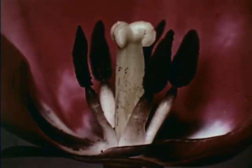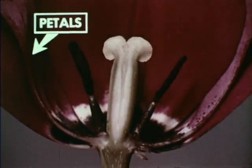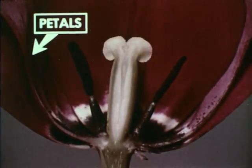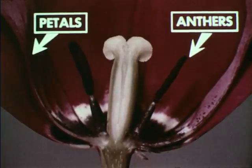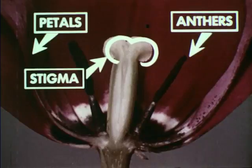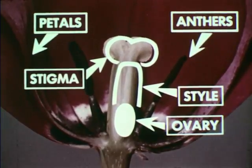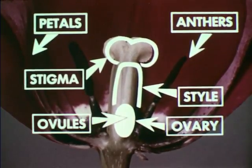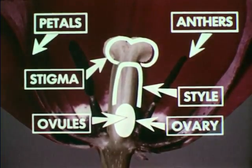This tulip has been cut lengthwise to show its structure. The petals are these conspicuous colored parts. These ends of the stamens are called anthers; anthers contain pollen. The pistil consists of the stigma, the style, and the ovary. Inside the ovary are ovules containing eggs. When fertilized by pollen, these eggs develop into mature seeds.